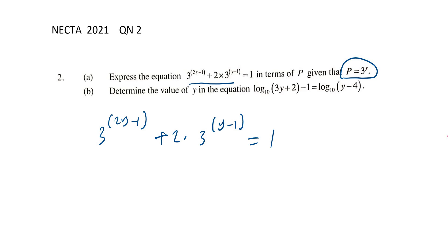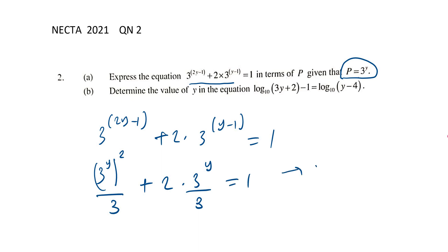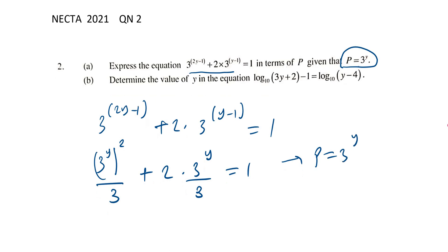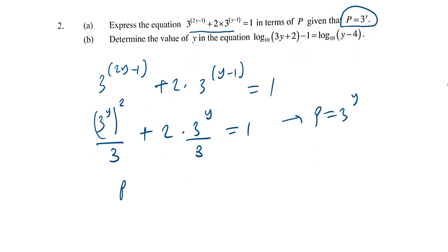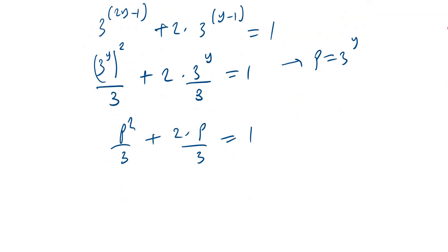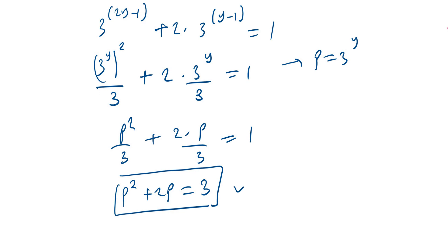This becomes 3^y squared over 3 plus 2 times 3^y over 3, and the result equals 1. But we are given that P = 3^y, so here you have P²/3 + 2P/3 = 1. Multiply by 3 throughout: P² + 2P = 3. And that's it expressed.